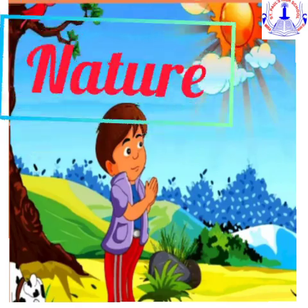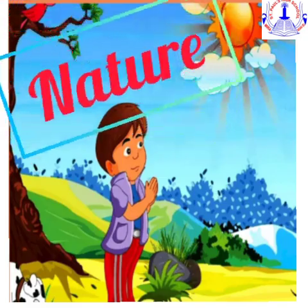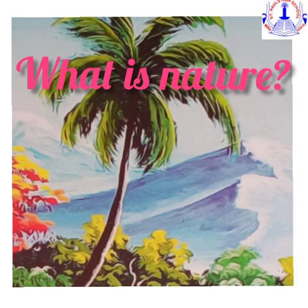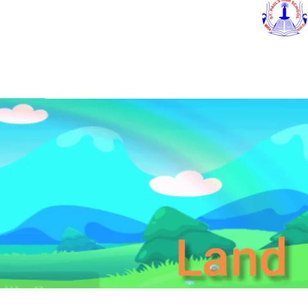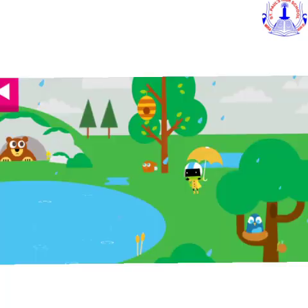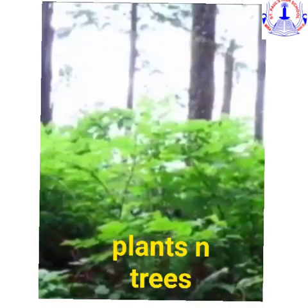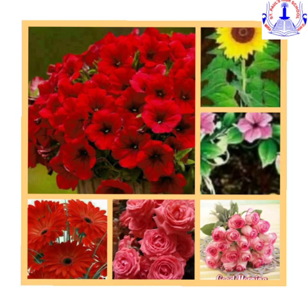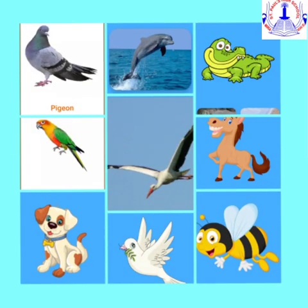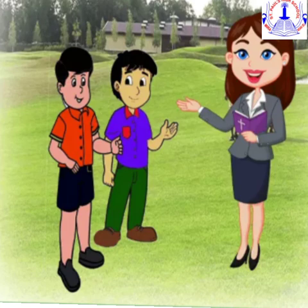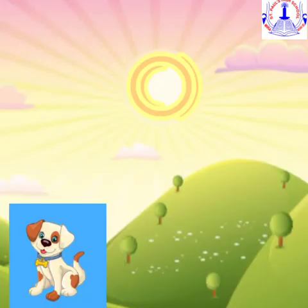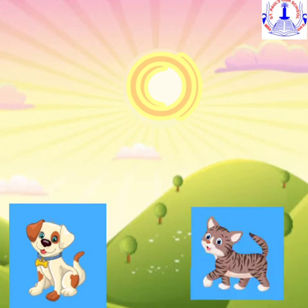What is Nature? Nature means the surroundings like air, water and land. It consists of everything we see around, like trees, plants, flowers, animals, birds, and all people. People like mother, neighbors, friends are all part of Nature.